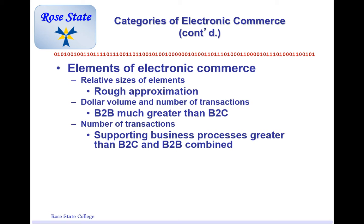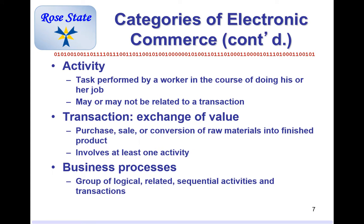What are the elements of e-commerce? The business-to-business sector is going to be a lot bigger than business-to-consumer. Why? Businesses have a heck of a lot more money, and businesses are going to purchase a lot more than a consumer will. Where we buy in quantities of one, Walmart buys in quantities of millions. Let's define a couple other terms: Activity is a task performed by a worker in the course of doing their job — day-to-day operations. A transaction is the exchange of value — the purchase, the sale, conversion of raw materials. Business process is that activity and transaction in every part of the business put together — the whole scope of the business.